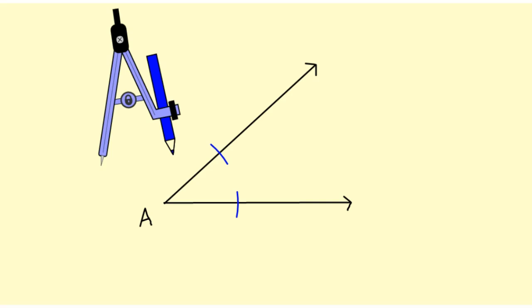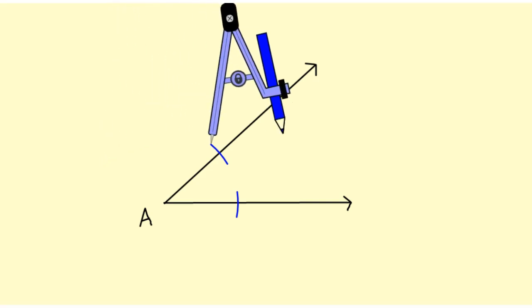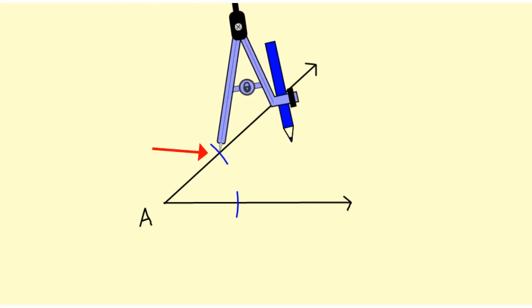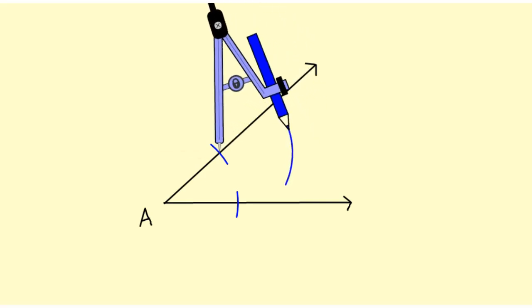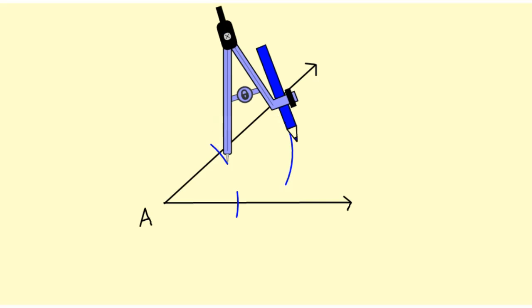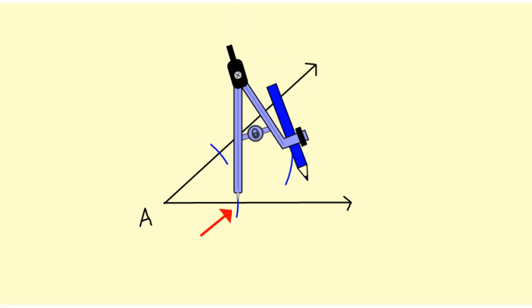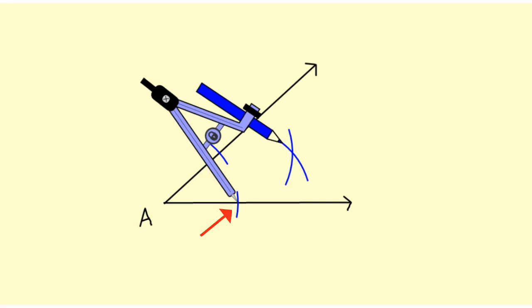Then I'm going to take my compass and I'm going to put the point where that arc intersects the first ray and I'm going to draw an arc in the interior. And I'm going to pick it up, put it on the other point of intersection, and do the same thing.